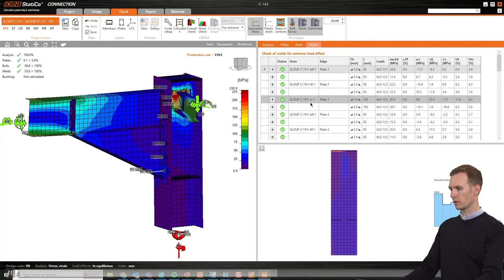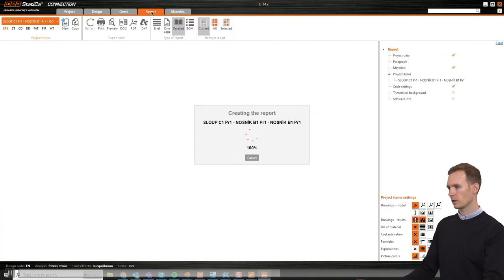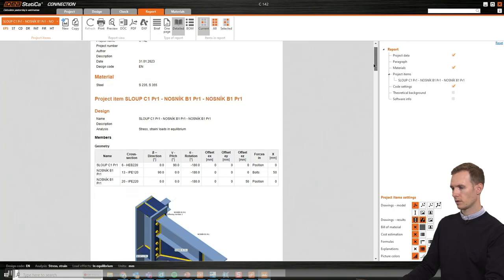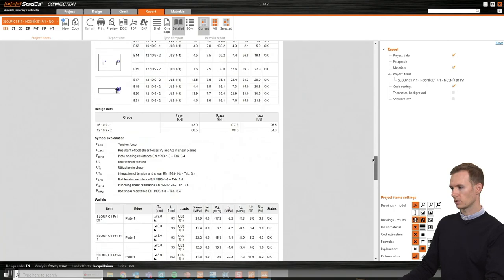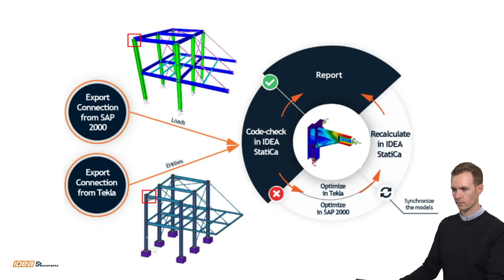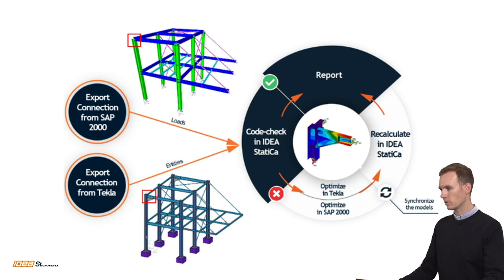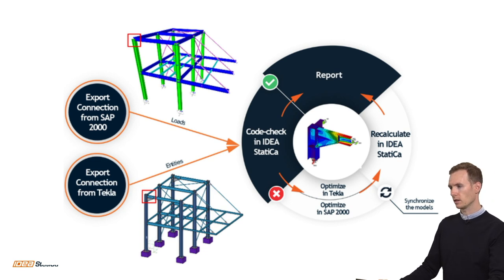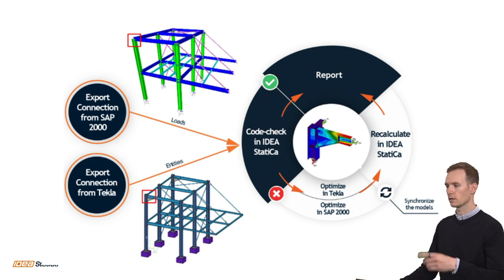Here are the welds, and you can also see the stresses along each weld. In the report tab, a report is automatically created — you can expand it to include all code checks, and you get a summary with OK or not OK for each item. That's how the BIM links work. If you need to change something, you go back into Tekla or SAP2000, make changes, hit the synchronize button, and run the analysis once more.